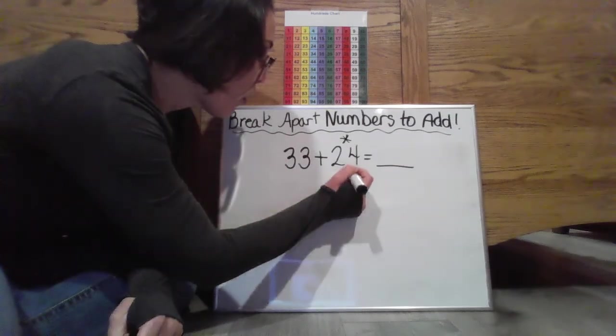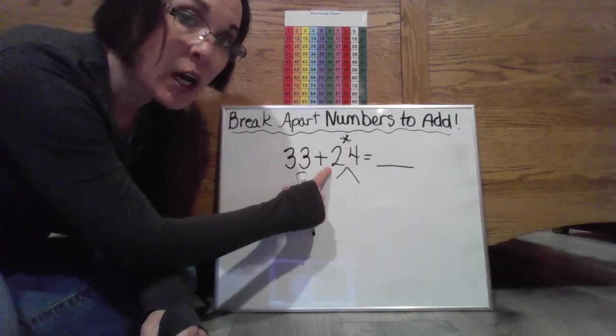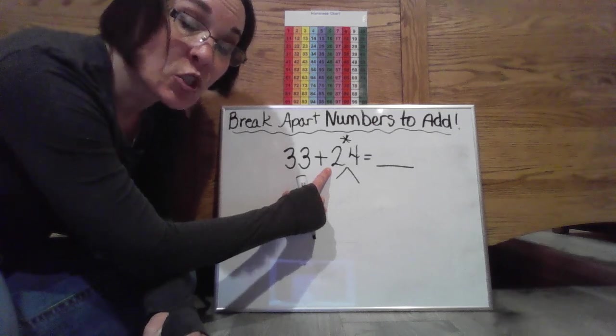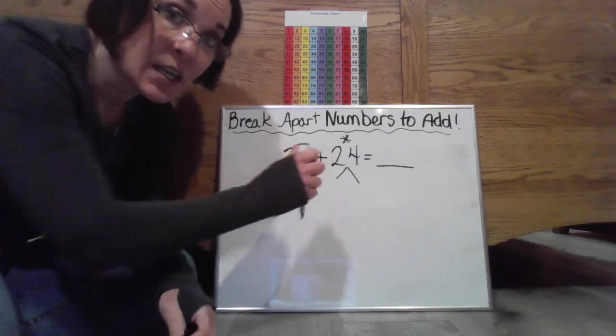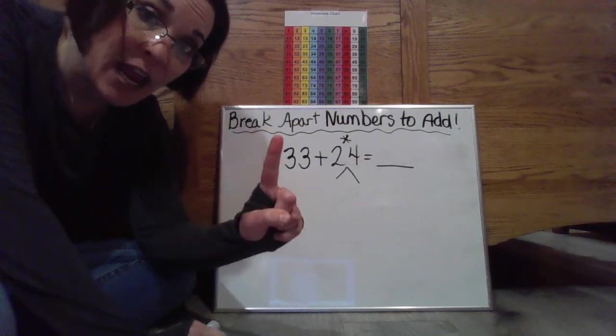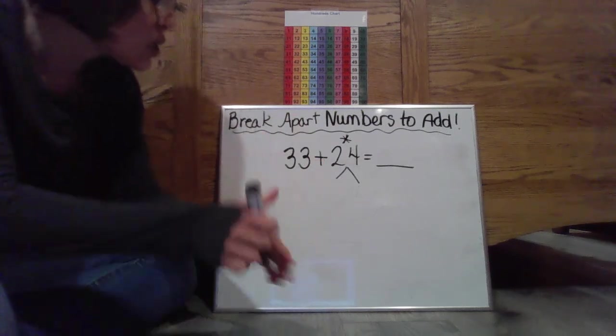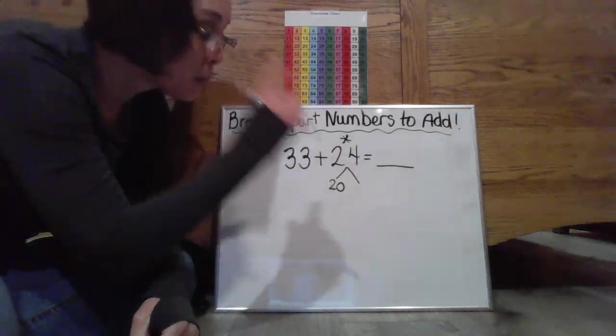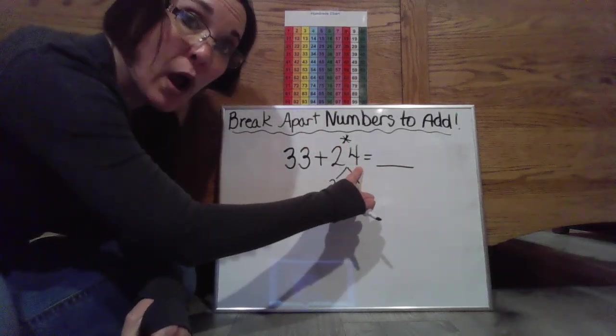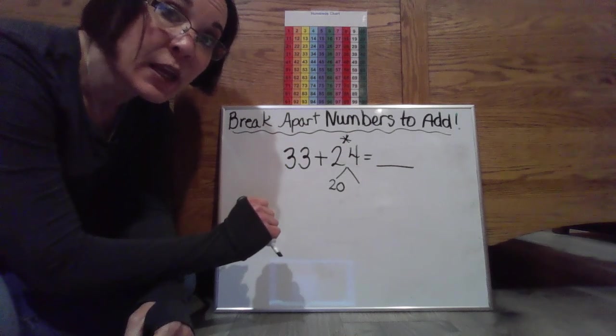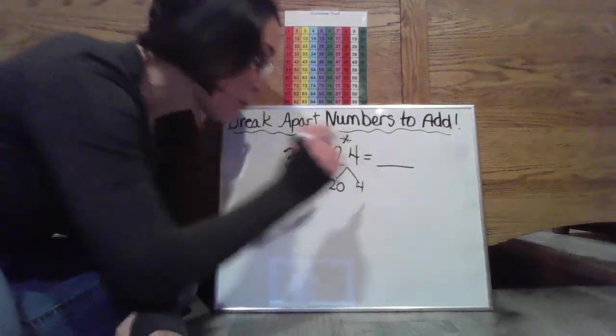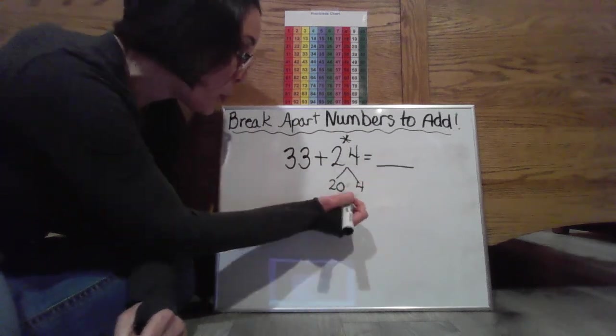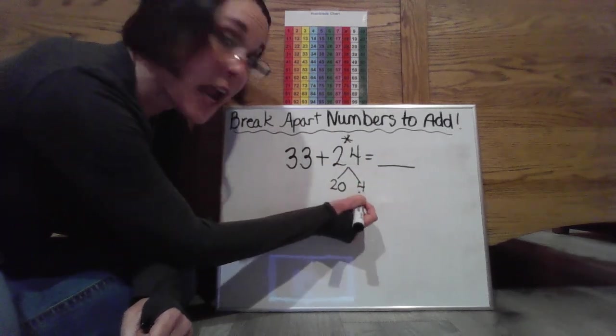So when we talk about two tens you think about that's two ten sticks. So if you were to count that that would be 10, 20. So if I want to break this down it's going to be a 20 plus four ones which would be those four little number cubes. So if I were to break this down a 24 would be a 20 and a 4.